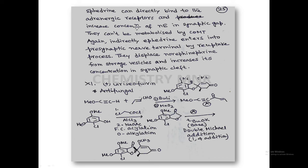With this we have finished the tenth molecule. We will go to the eleventh molecule, griseofulvin. Griseofulvin is an example of a chiral spiro compound. This compound has chiral centers, and one carbon is shared by two rings — making it an example of a spiro compound. It is antifungal — used when the body gets infection due to fungus.